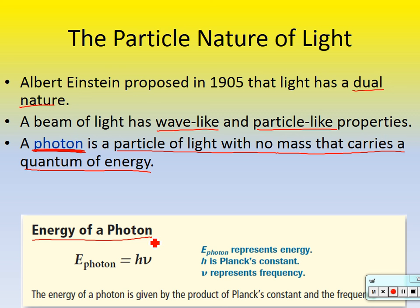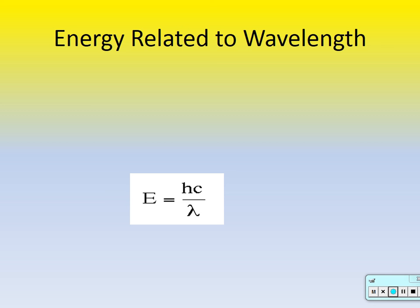The energy of a photon equals H times V — Planck's constant times frequency. If frequency goes up, energy goes up. If frequency goes down, energy goes down. Planck's constant H will always be given to you — it's that really small number.